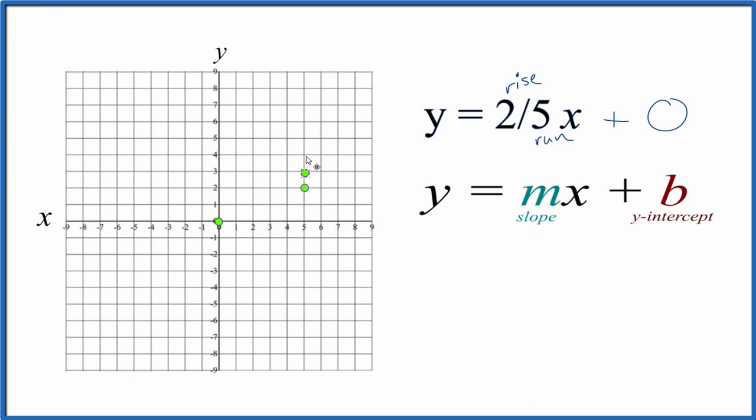Let's do it again. We rise 1, 2, and we go over 1, 2, 3, 4, and we go off the graph. But you can see it lines up.